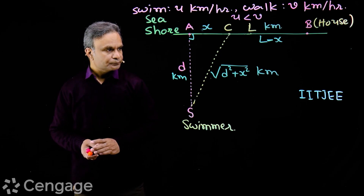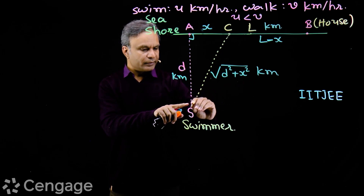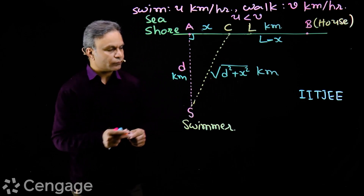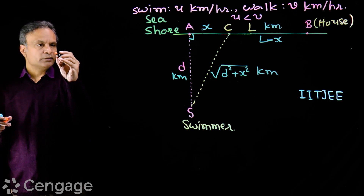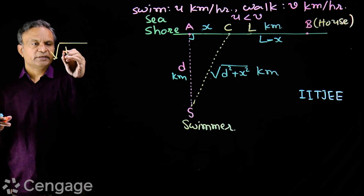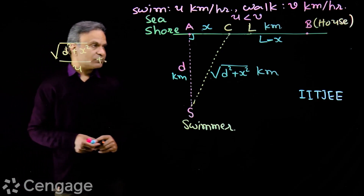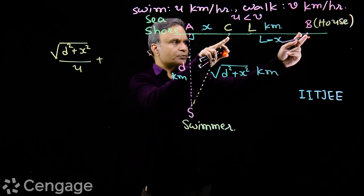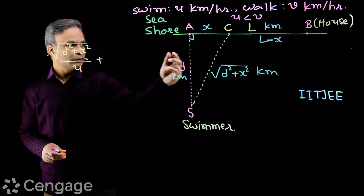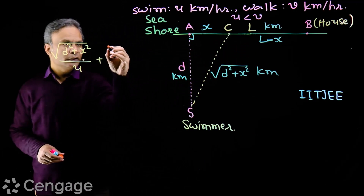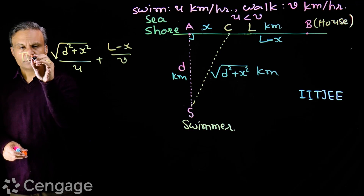How do we get the time function? It is simple. The time taken to swim from S to C is distance over speed, which is √(d² + x²) / u. The time taken to walk from C to the house is (L − x) / v, since the speed of walking is v. So the total time function T(x) = √(d² + x²) / u + (L − x) / v.